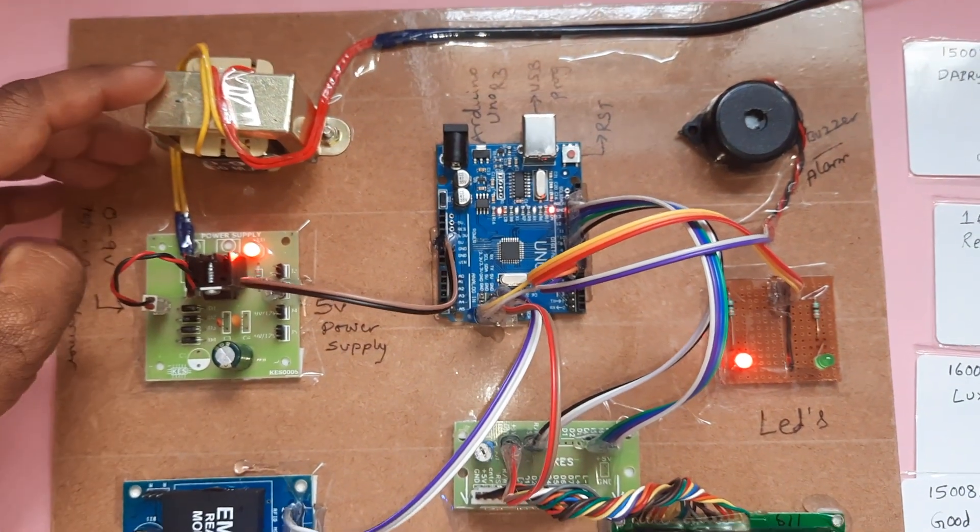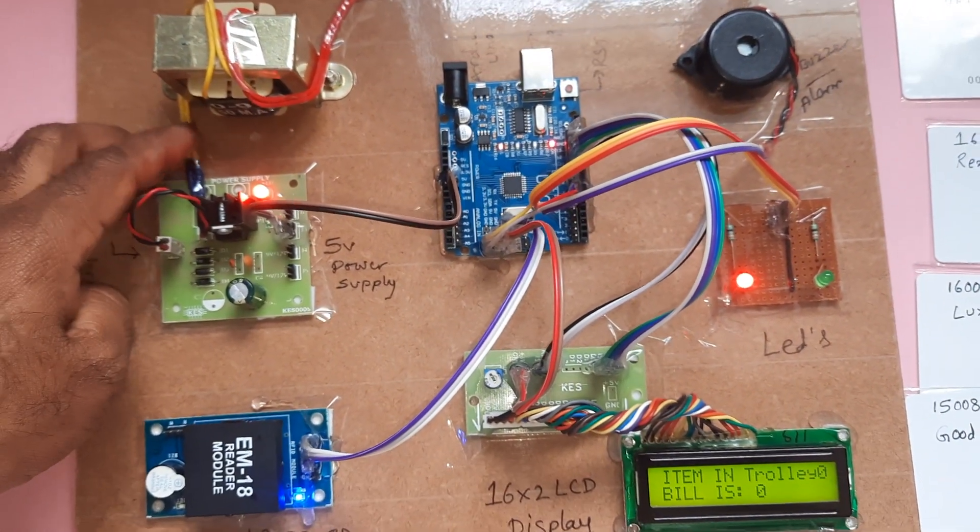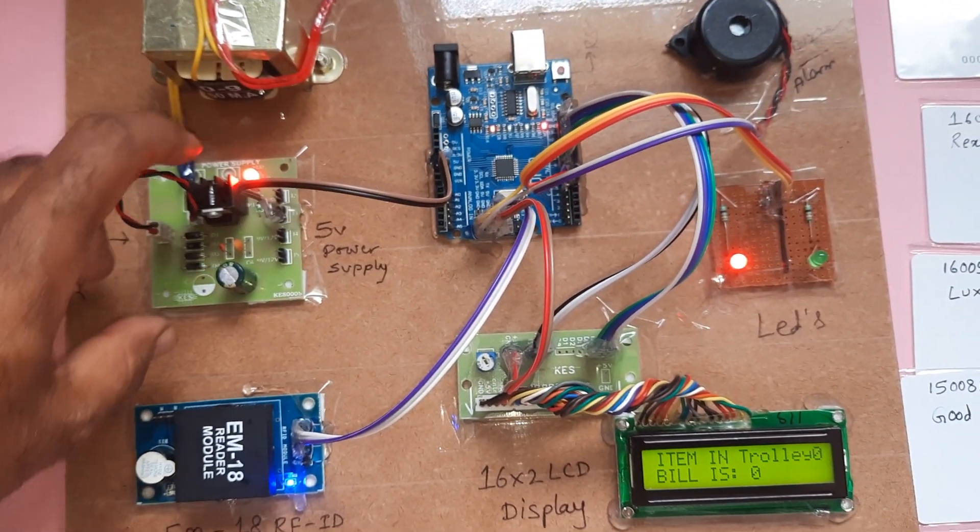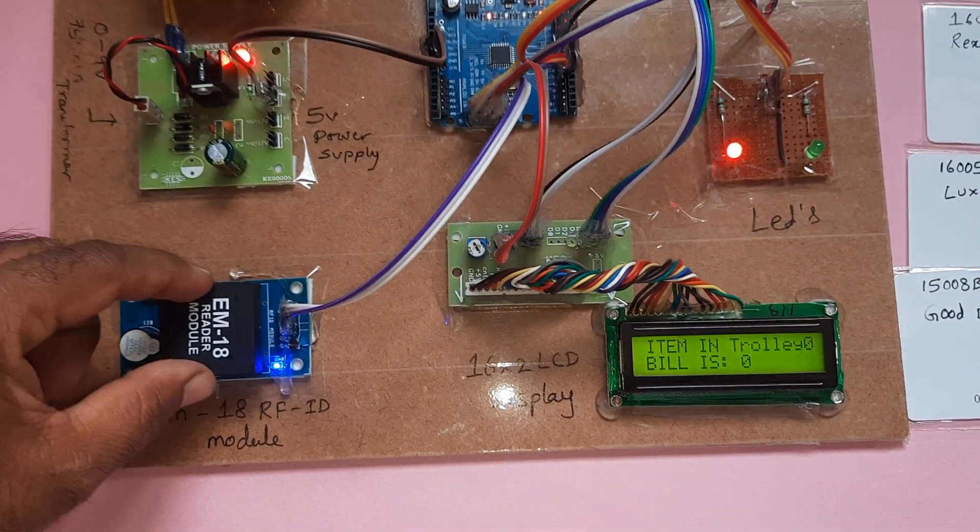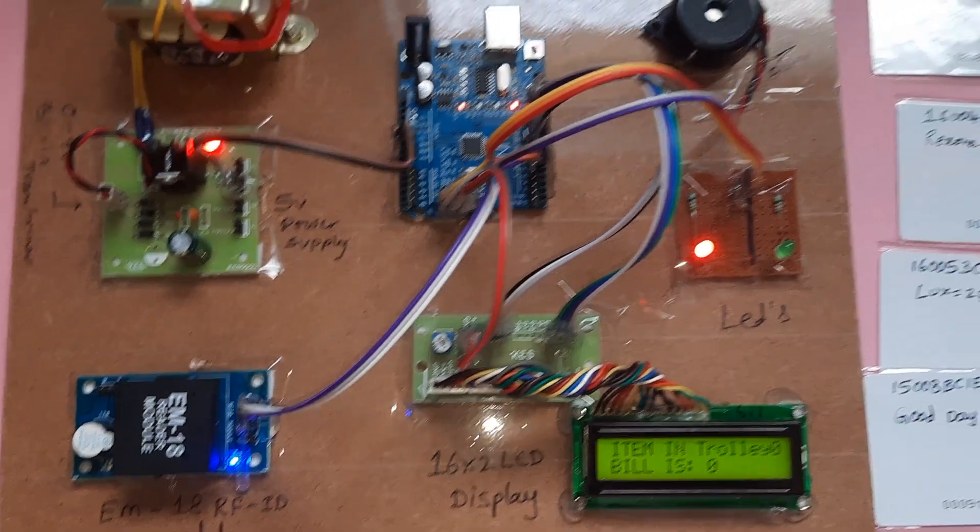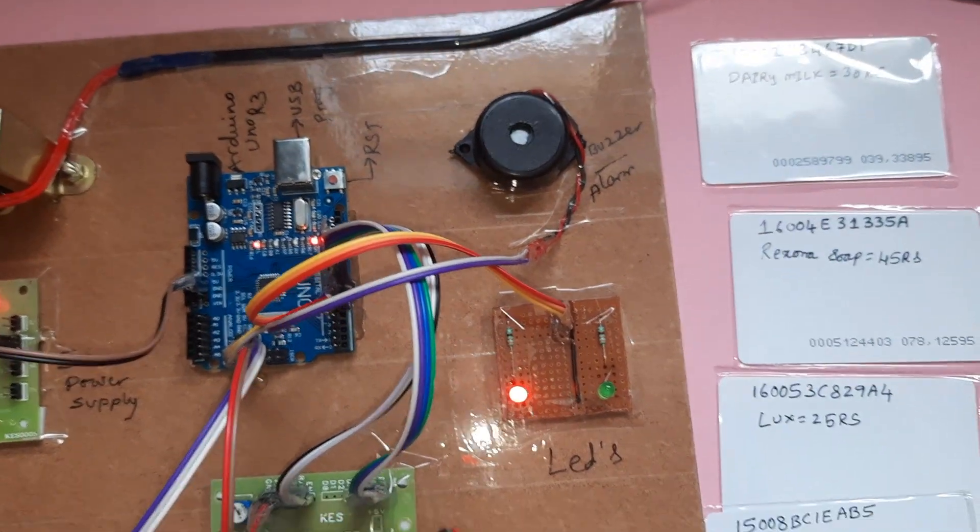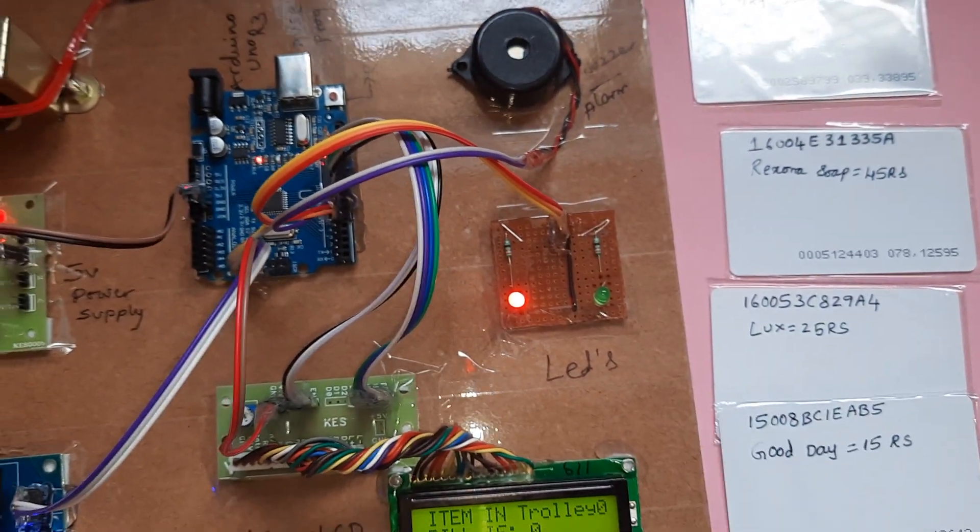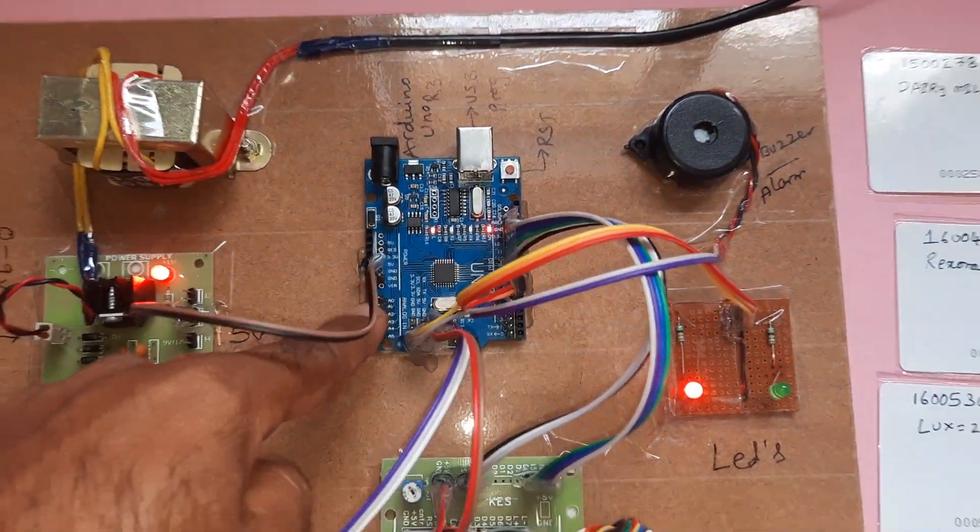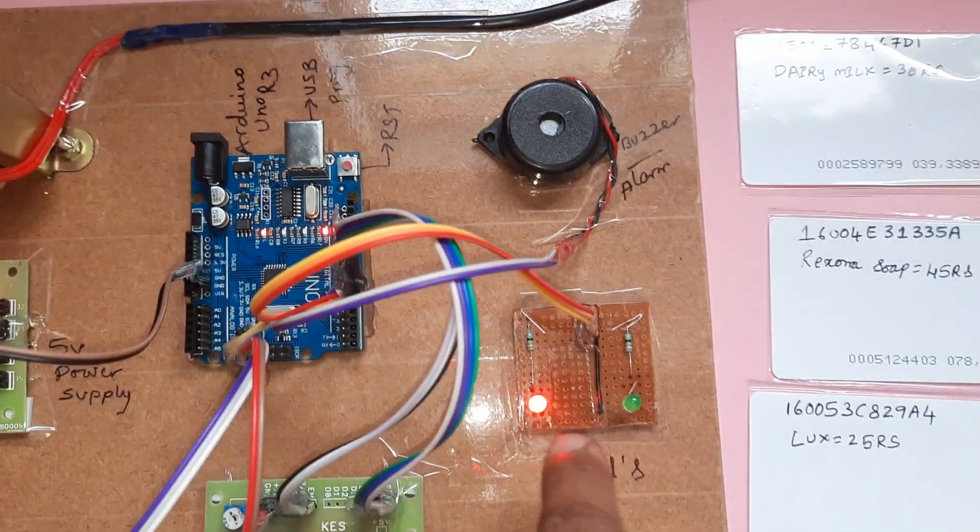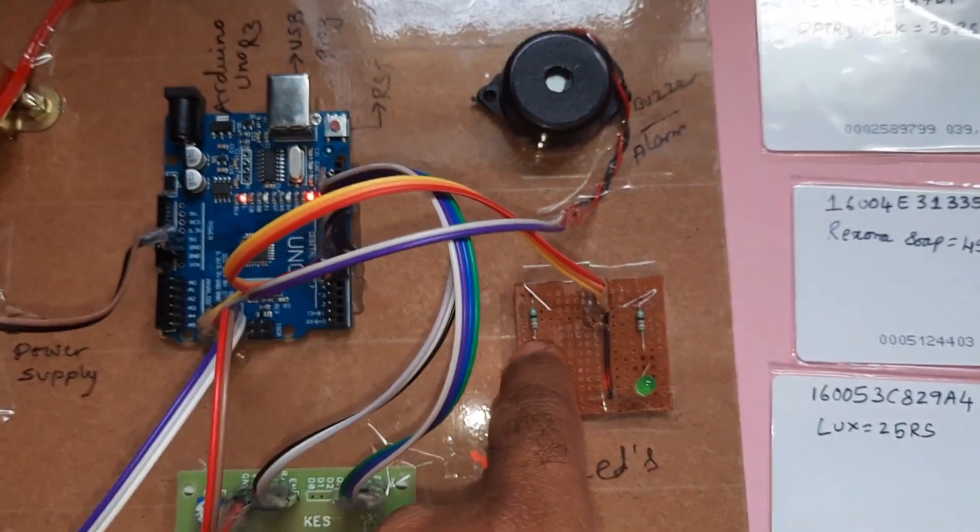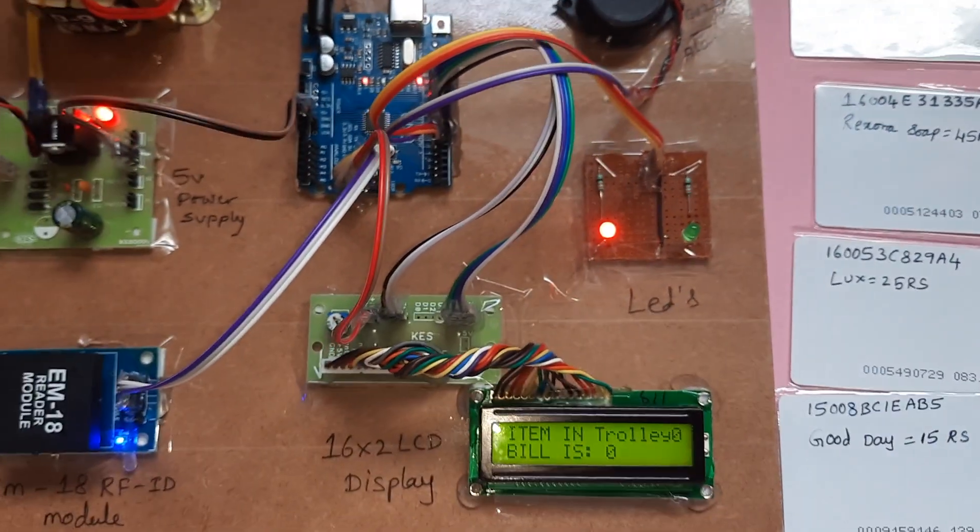230 volt input, step down transformer, 9 volt output AC, bridge rectifier, filter capacitor, 7805 regulator, 5 volt power supply module. EM18 RFID receiver module and these are the RFID tags with 125 kilohertz frequency transmitter modules. Arduino Uno R3 board, 16x2 LCD display, alarm, one red LED, one green LED. Here we are using 330 ohm resistors.